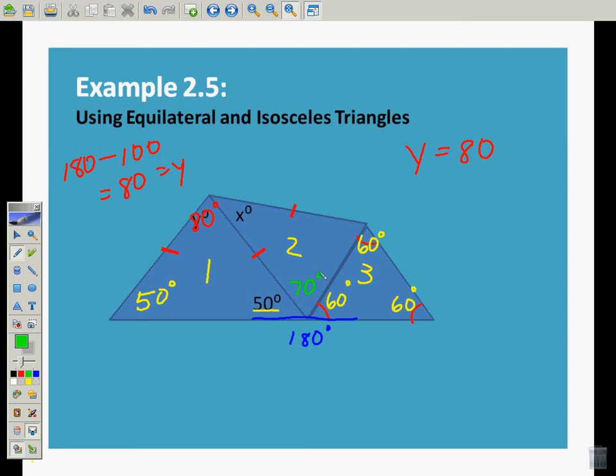Well, if that's 70 degrees, and I know that triangle two is an isosceles triangle, this must be 70 also. Well, if I have two angles of that triangle, so 140 degrees, if I subtract that 140 from 180, I find that x is equal to 40.